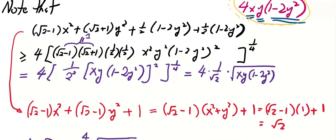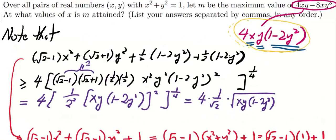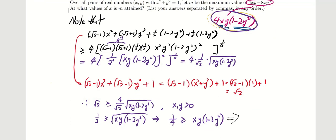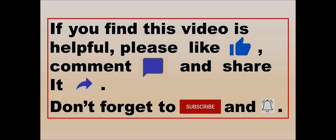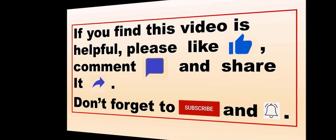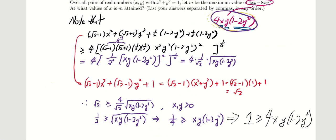Don't forget that the expression we want to find is 4 times xy times (1 minus 2y squared). So this means that 4xy(1 minus 2y squared) is actually not more than 1. For now, we know this expression is not more than 1, and we always want to know whether equality holds.